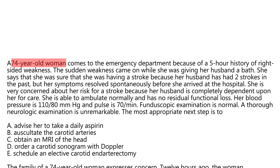Vignette: A 74-year-old woman comes to the emergency department with a five-hour history of right-sided weakness. The sudden weakness came on while she was giving her husband a bath. She was sure she was having a stroke because her husband had two strokes in the past, but her symptoms resolved spontaneously before she arrived at the hospital. She is very concerned about stroke risk. She is able to ambulate normally with no residual functional loss. Blood pressure is 110 over 80, pulse is 70.